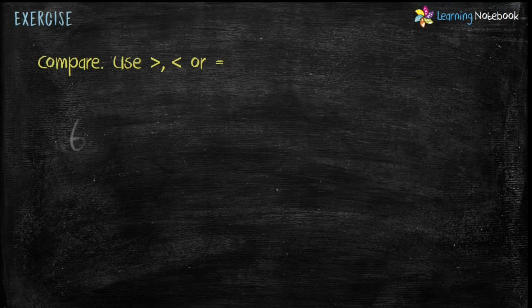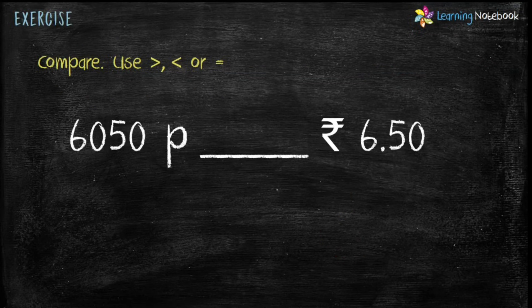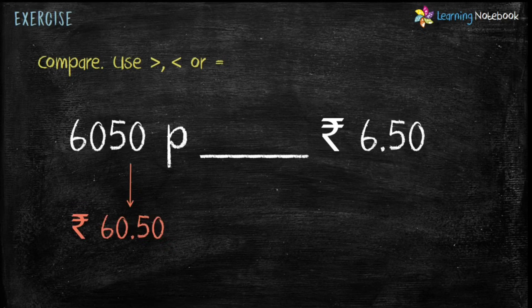Next, compare 6,050 paise with Rupees 6.50. We can convert 6,050 paise into Rupees 60.50. So Rupees 60.50 is greater than Rupees 6.50.